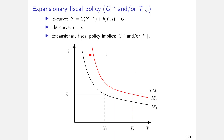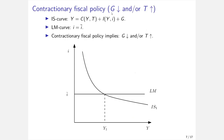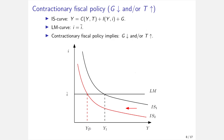We can also consider the opposite: contractionary fiscal policy, where the government decreases consumption expenditures or increases taxes. This shifts the IS curve to the left. The interest rate remains at I-bar, but the intersection of the LM curve and the IS curve is now at the lower output level Y2, causing a contraction of the economy. In both the expansionary and contractionary cases, the multiplier effect operates in the background, so the new equilibrium already reflects all multiplier effects having played out.